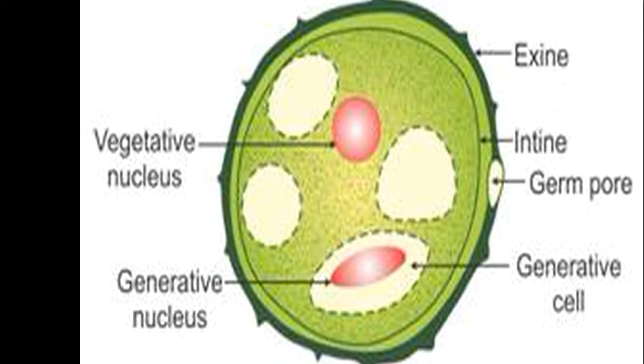Finally, the microspores form a double wall of the pollen grain. The outer wall called the exine made up of sporopollenin, and the inner wall called the intine made up of cellulose and pectins.